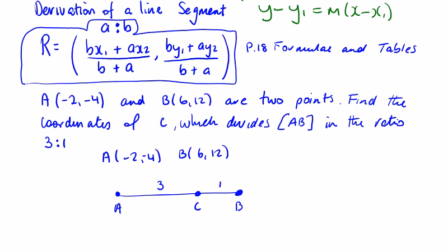So if we just look at the relationship between A and B, what happens between A and B? I'm looking at my x value first. My x value goes from -2 up to 6 which is a jump of 8. So if we look at my ratio 3 to 1, we have 3 quarters and 1 quarter. That's a ratio of 3 to 1.